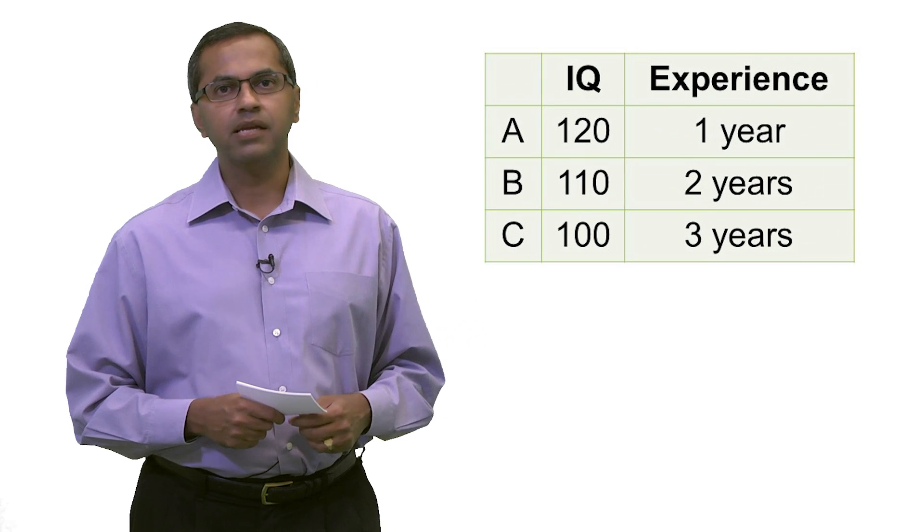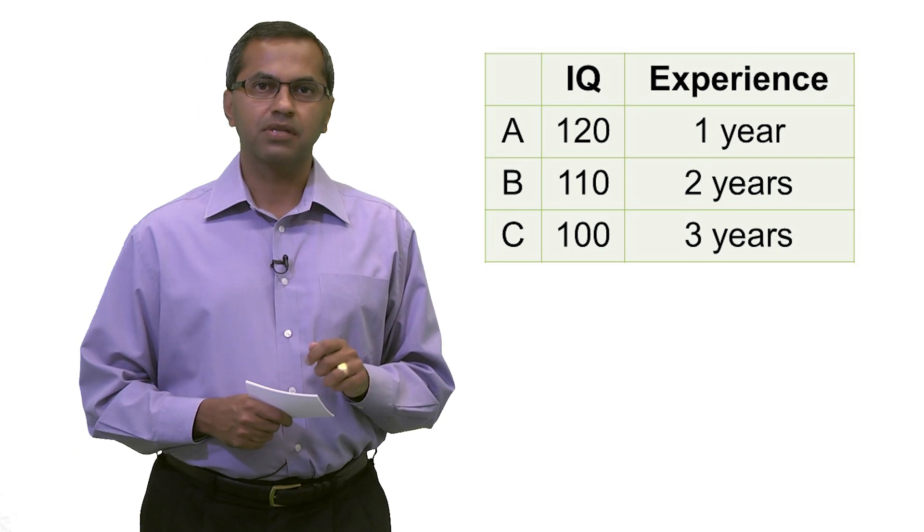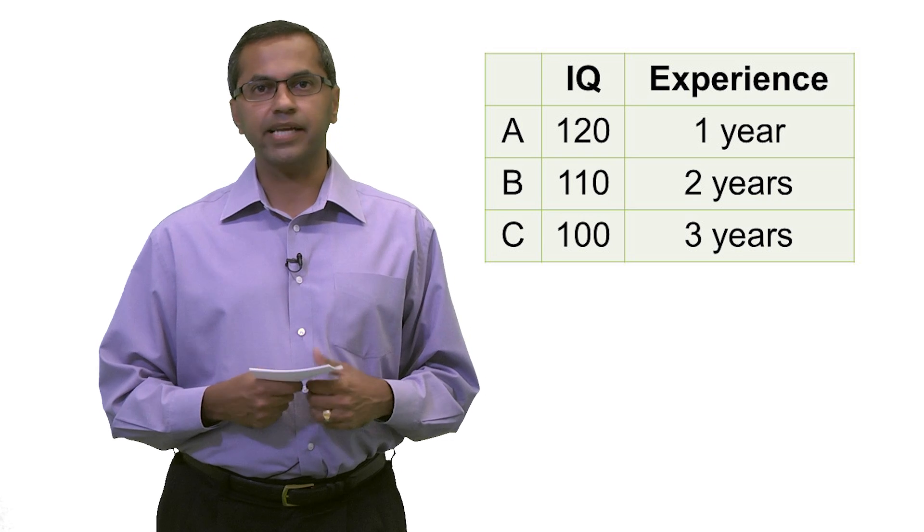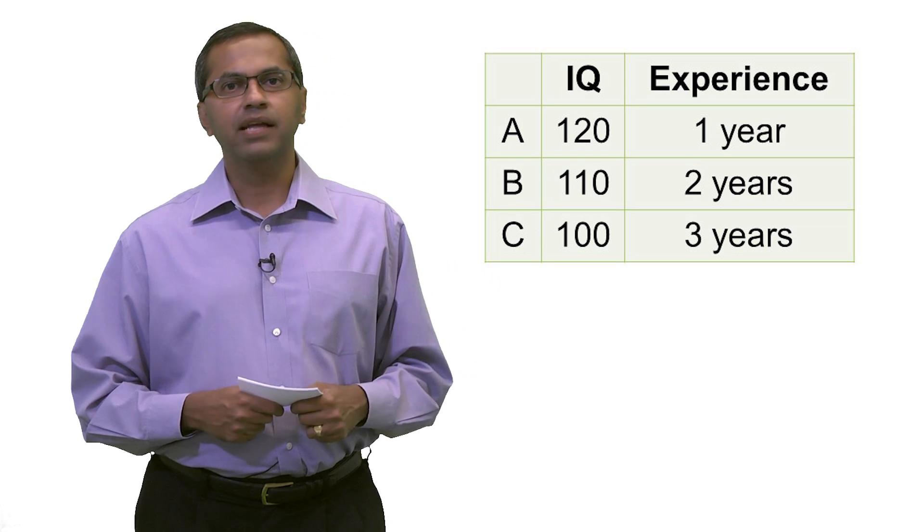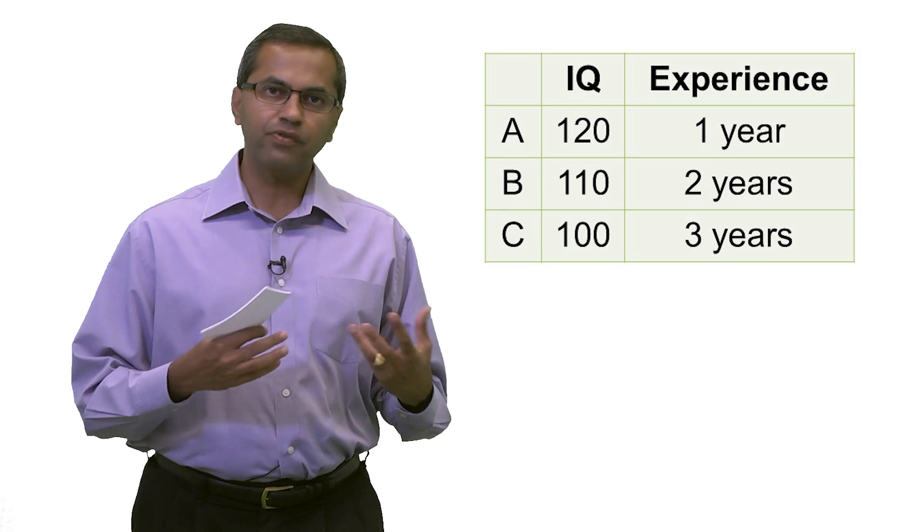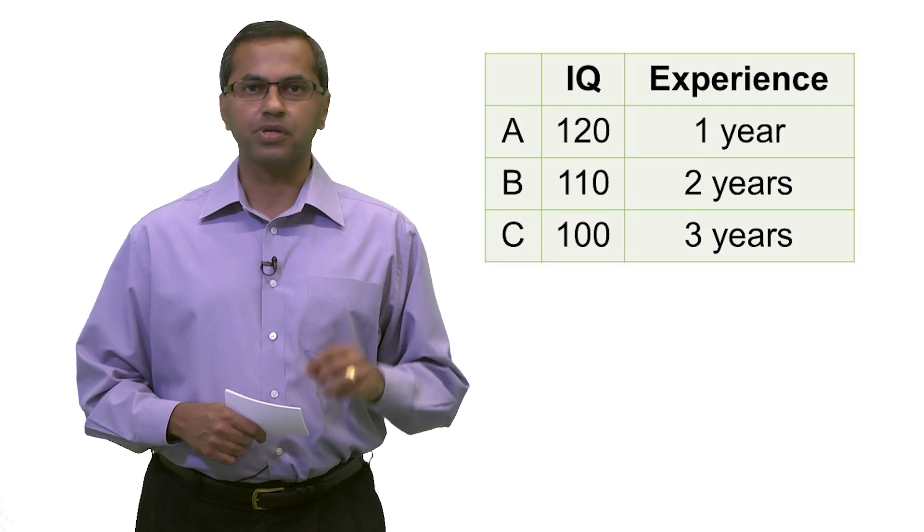And I want to show you one simple example. Let's imagine that you are looking for a research assistant, you're looking to hire someone, and you have three applicants: Mr. A, Mr. B, and Mr. C. And for each one of them, you've got data on two attributes. The first one is their IQ, which is based on a standardized IQ test. The second one is the number of years of work experience that these people have.